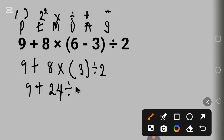divided by two. Next must be division. 9 + 24 ÷ 2 is 12. 9 + 12 equal to